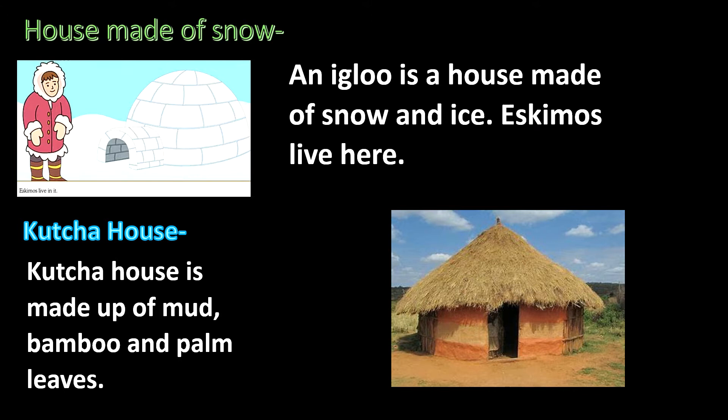According to the material, houses are divided into two types: kaccha house or pukka house. Kaccha houses are built of mud, bamboo, and palm leaves. These houses are weak houses.